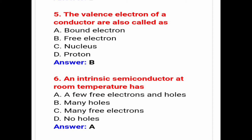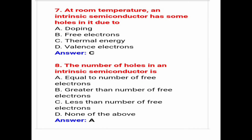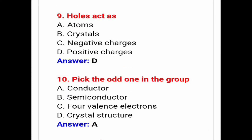An intrinsic semiconductor at room temperature has a few free electrons and holes. At room temperature, an intrinsic semiconductor has some holes in it due to thermal energy — answer is option C. The number of holes in an intrinsic semiconductor is equal to the number of free electrons — answer option A. Holes act as positive charges — option D.